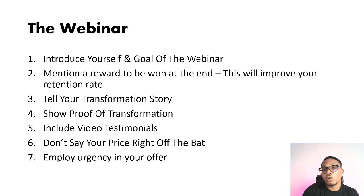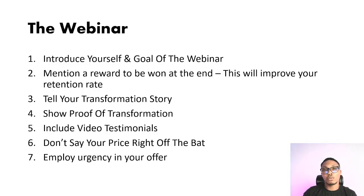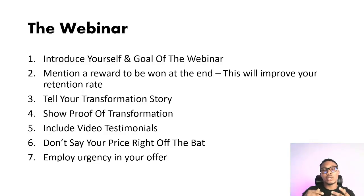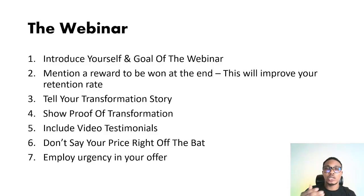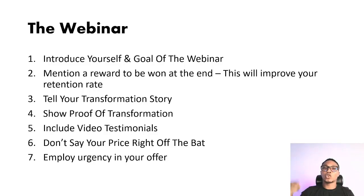Three: tell a transformation story. It could be yours, or that of the product creator if you're an affiliate, or any transformation story the product you're trying to sell has produced. And it's not enough to just tell the story — you also need to show proof of this transformation. It could be in the form of videos, pictures — any way that you can demonstrate the transformation convincingly. Fifth: include video testimonials. People don't want to be the first to try your product. You want it to be believable that a number of people who have used this product have gotten great results. Reach out to past users who can share video testimonials that corroborate your marketing claims — and all those video testimonials should be part of the webinar.